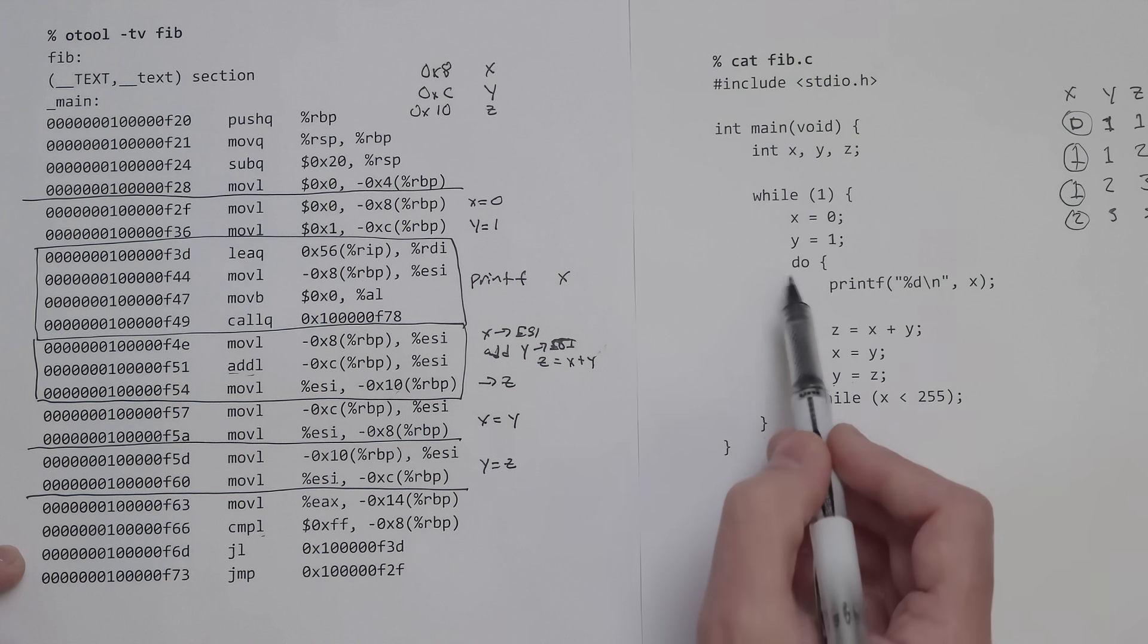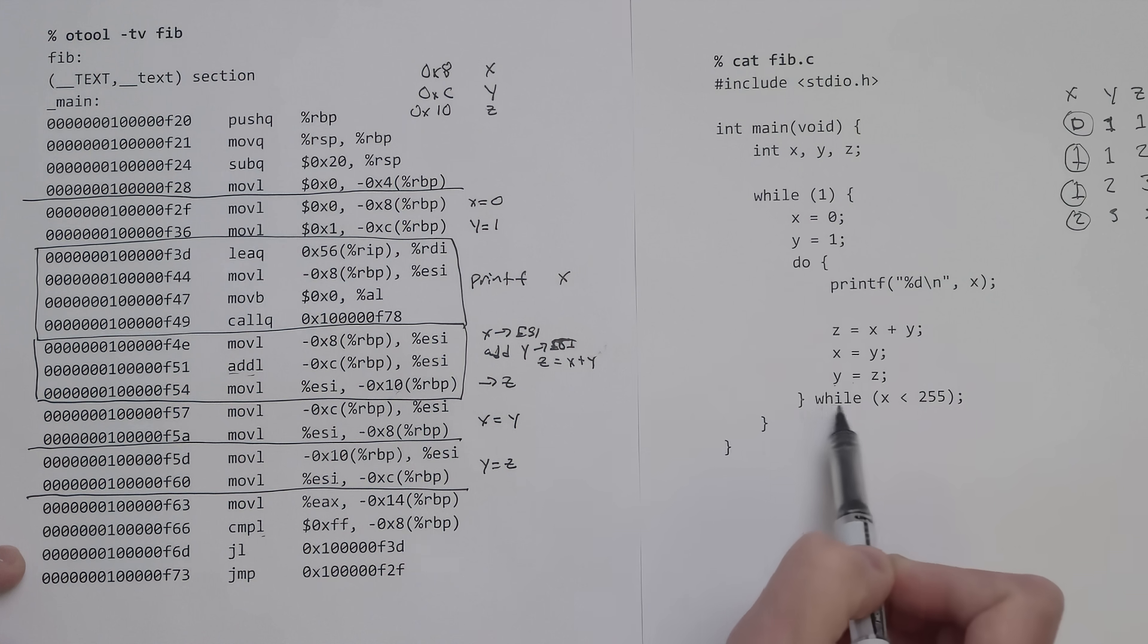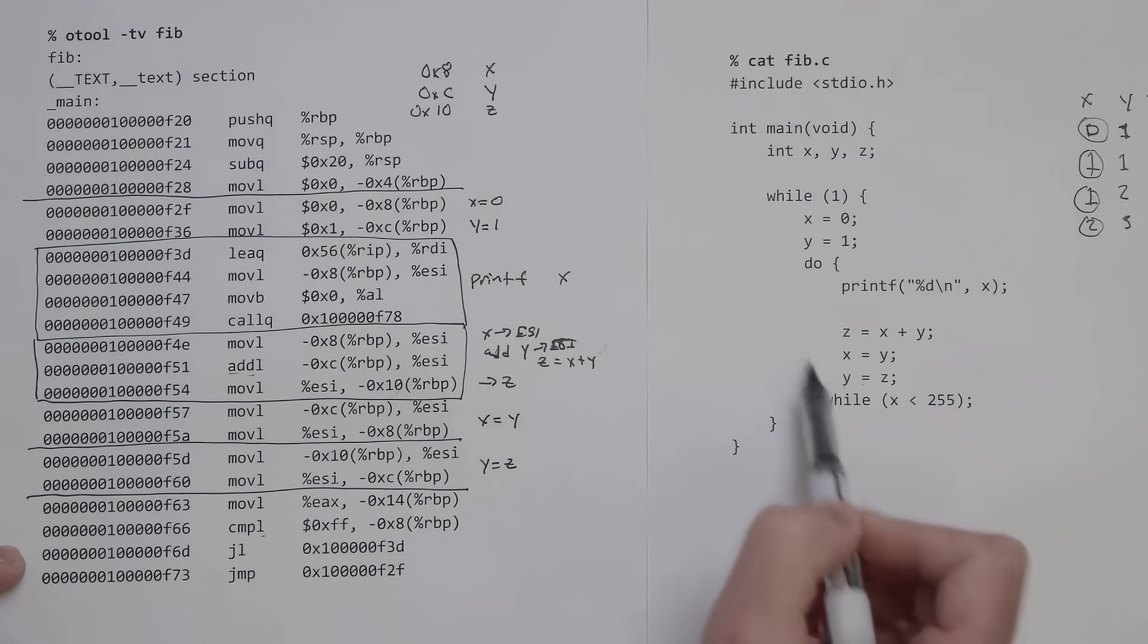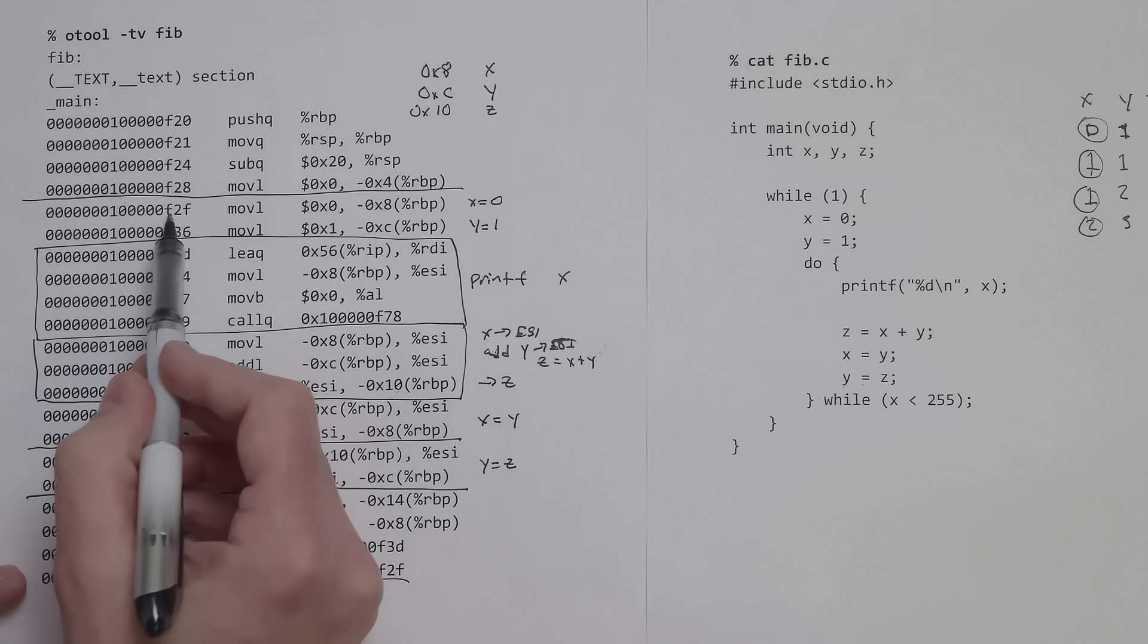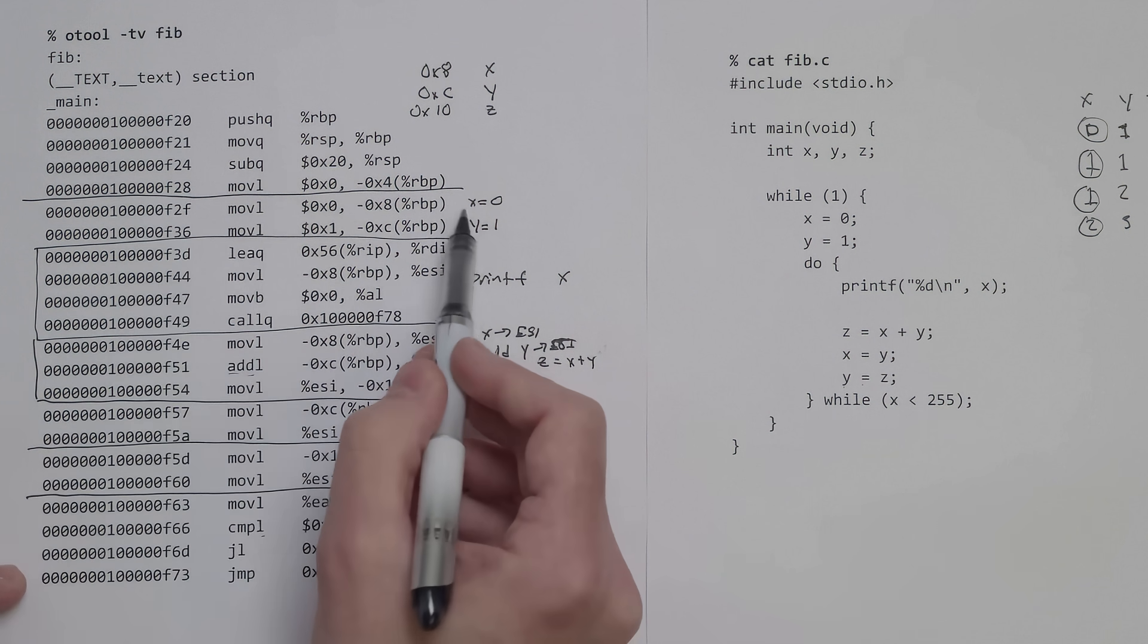If x is less than 255, we go back up to the printf, which is what we're saying here: while x is less than 255, we stay in this loop. If it's not less than 255, then program flow comes down to the next line, which is an unconditional jump. We would always jump to f2f, which is back here where we start with x equals 0.